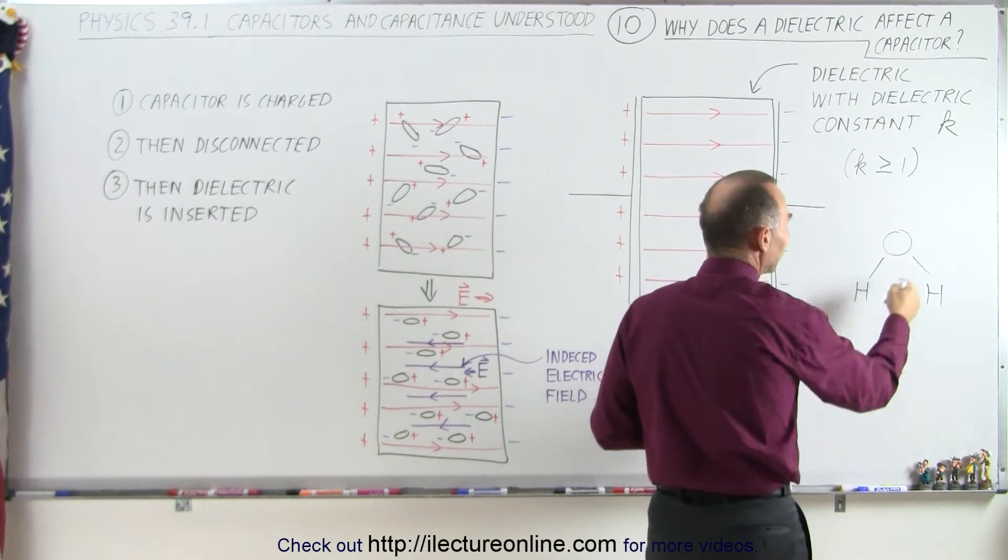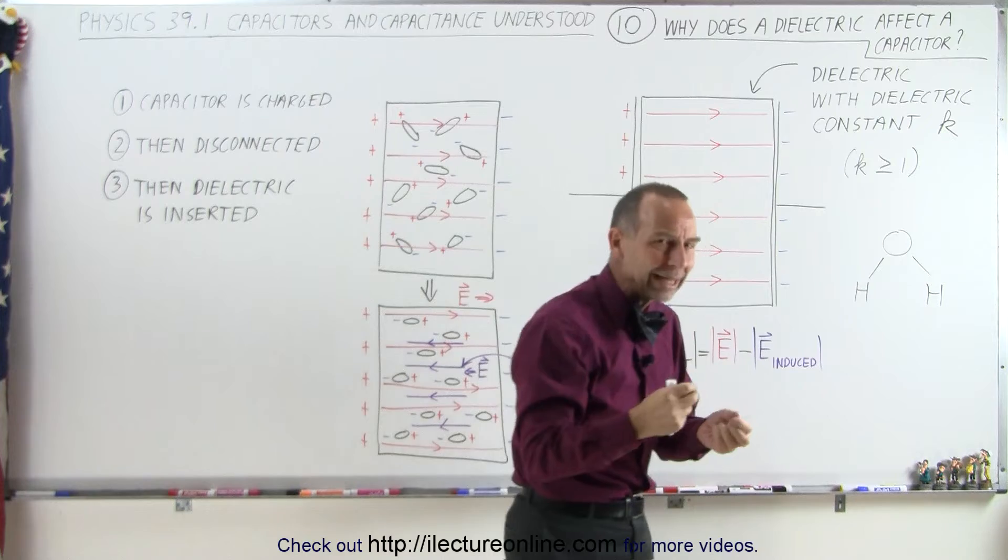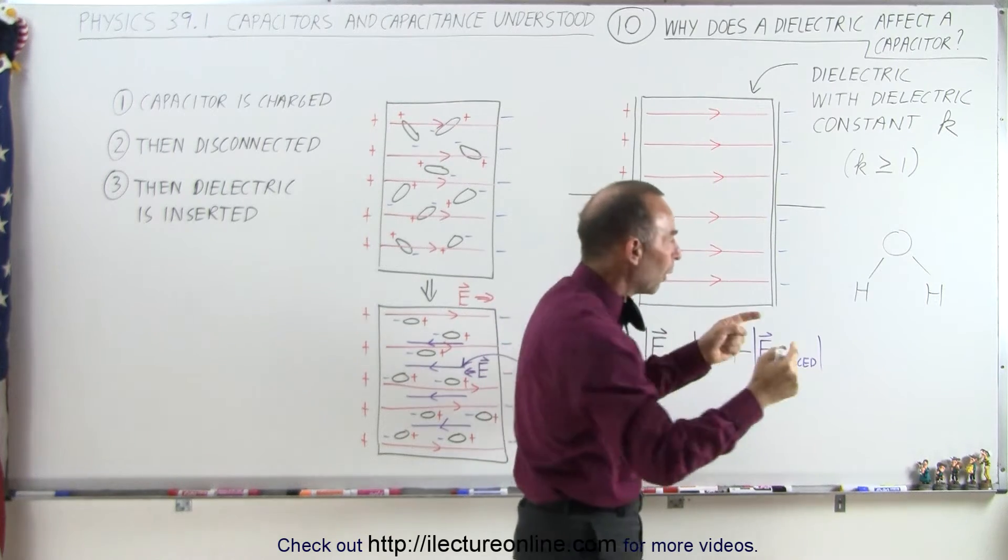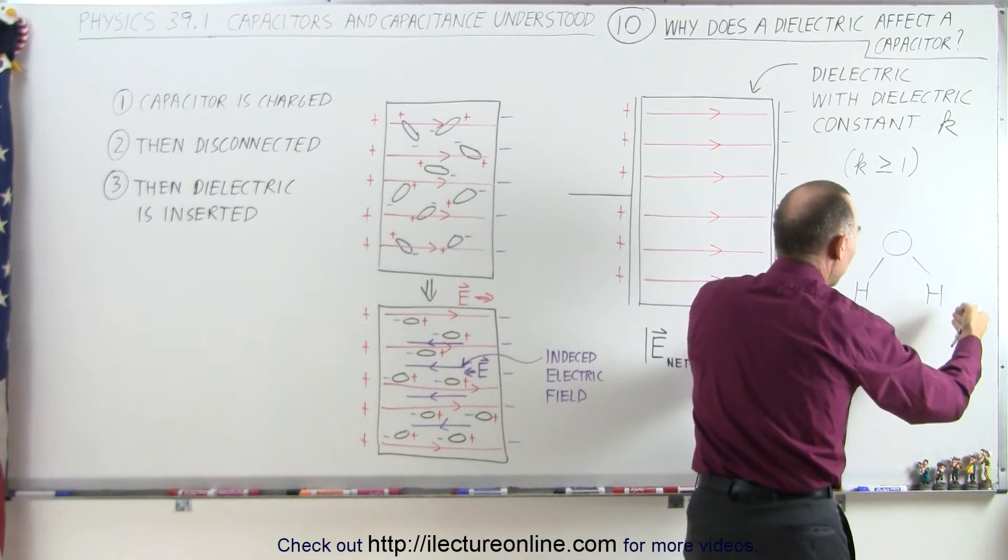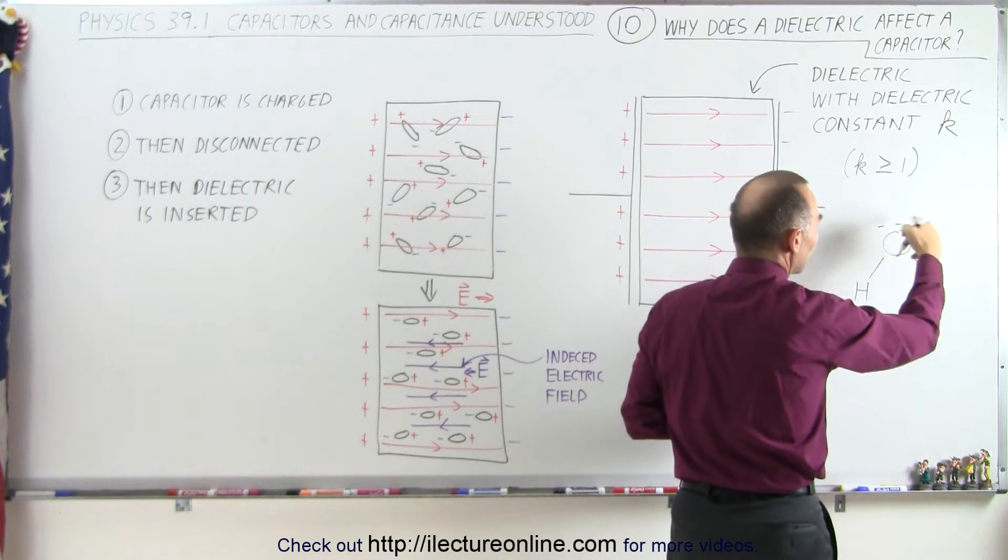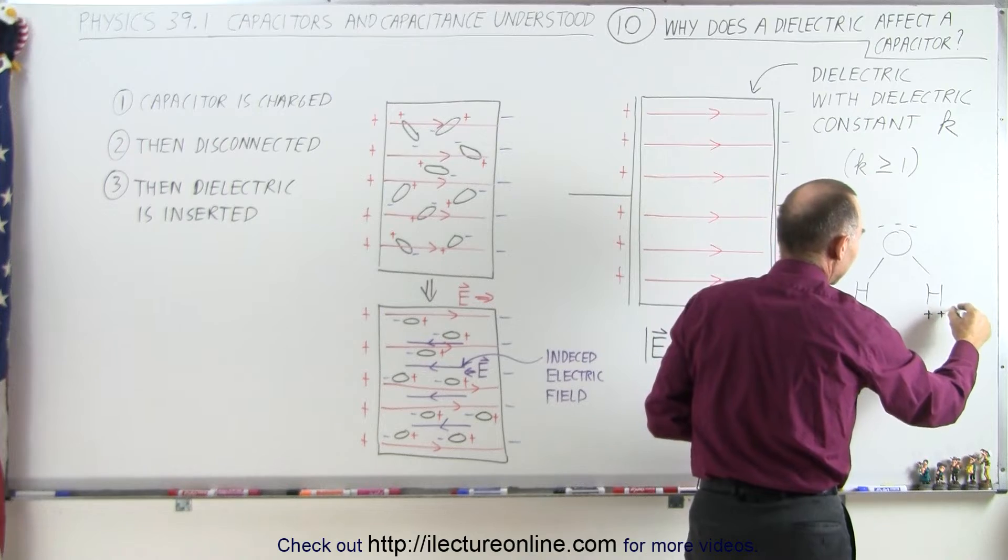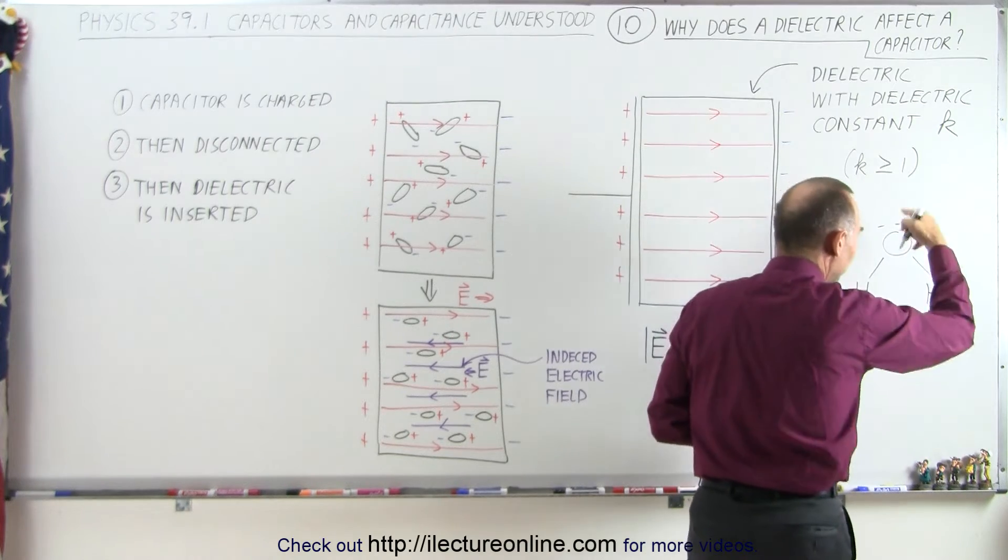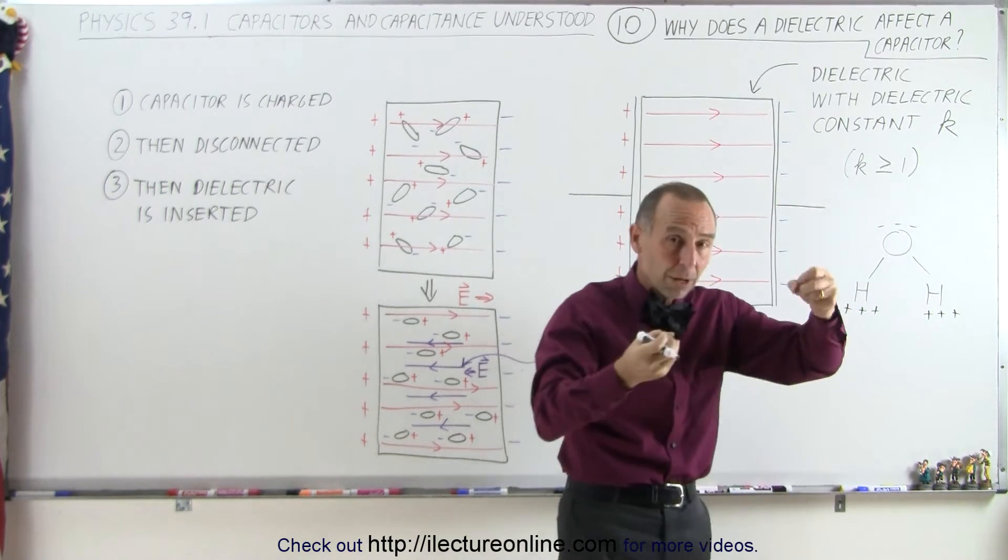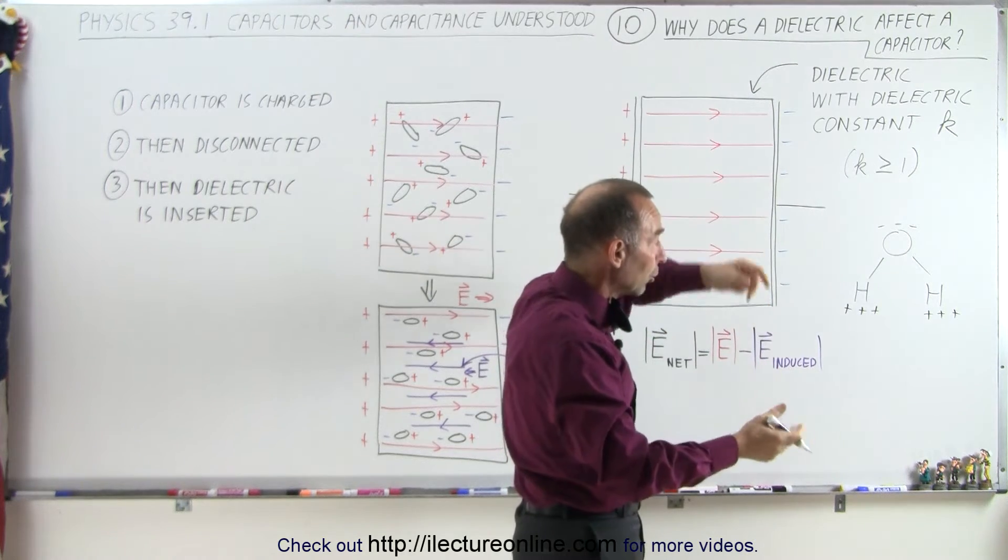So what happens is, since oxygen is more electronegative, it will pull that one electron that the hydrogen has onto itself, so this side of the molecule becomes more negatively charged. This side of the molecule, because of the absence of the electrons, will now become more positively charged, and you can see that that molecule, water, then becomes a polar molecule.